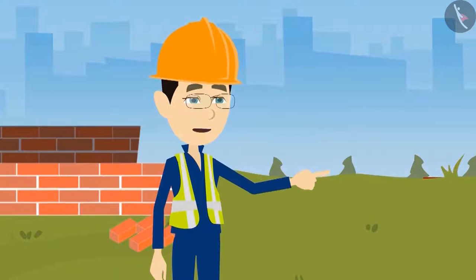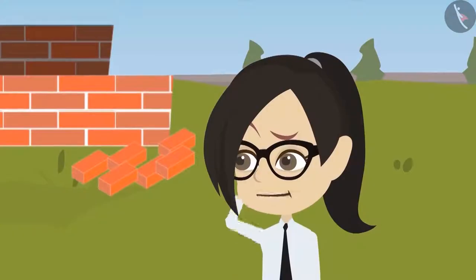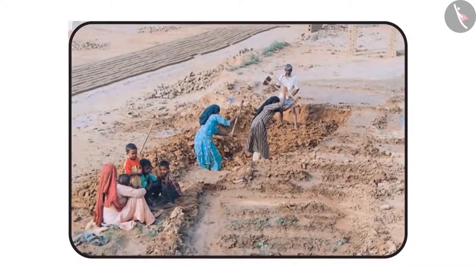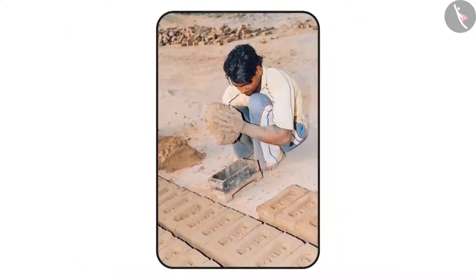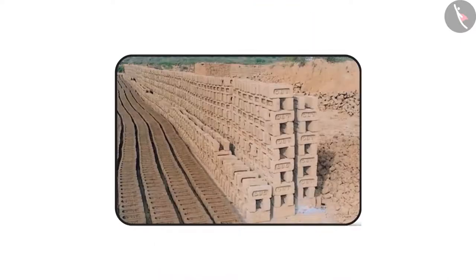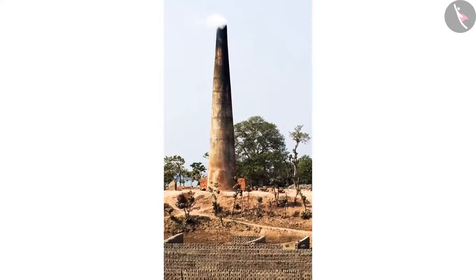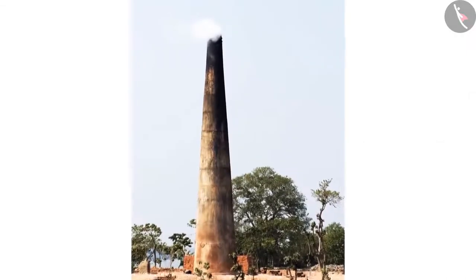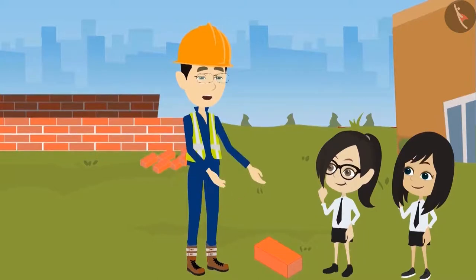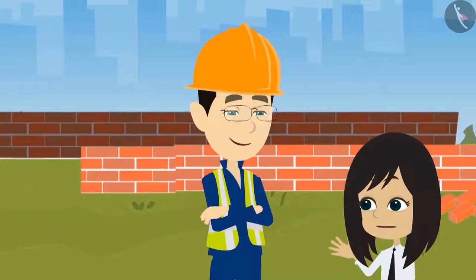Bricks are made with clay in a furnace. Water is added to soil and a dough is made, like what your mom makes for chapatis. Then it is put in a mold to give it the shape of a brick. The brick is then taken out of the mold and baked in the furnace until it gets hard and strong. This is how bricks are made.